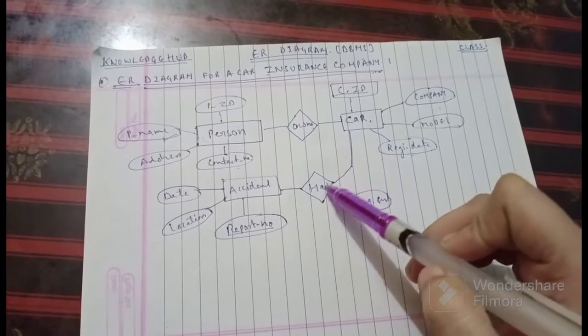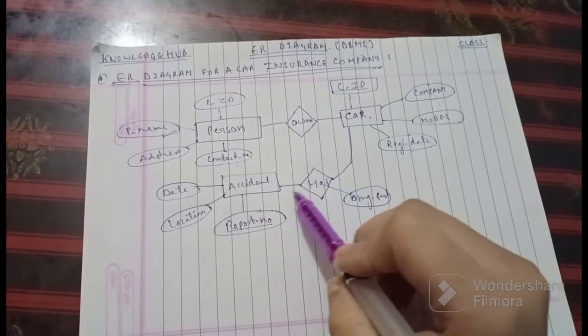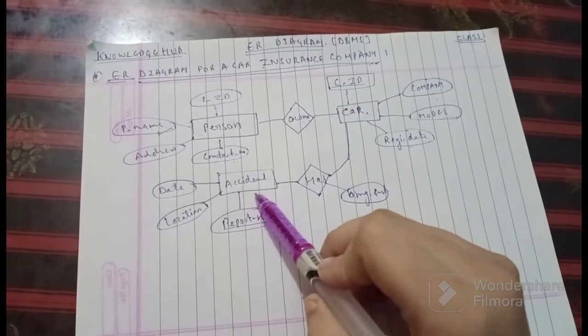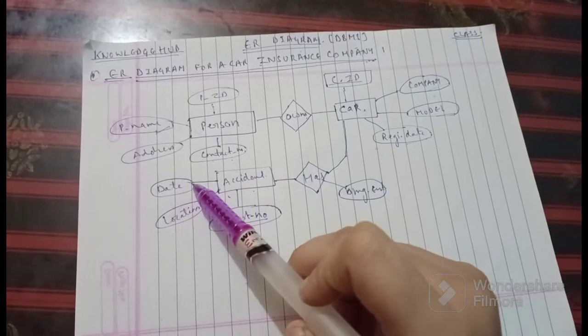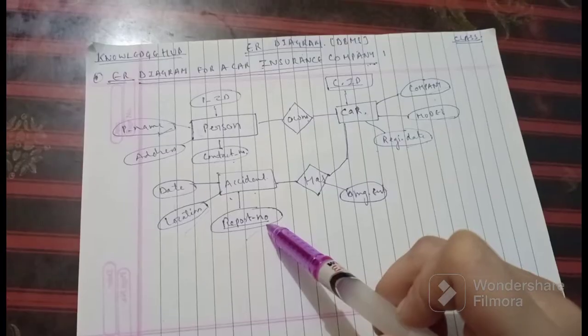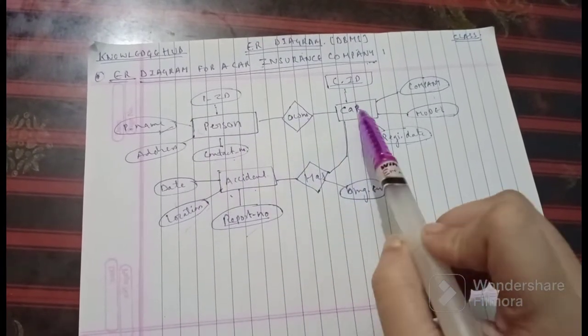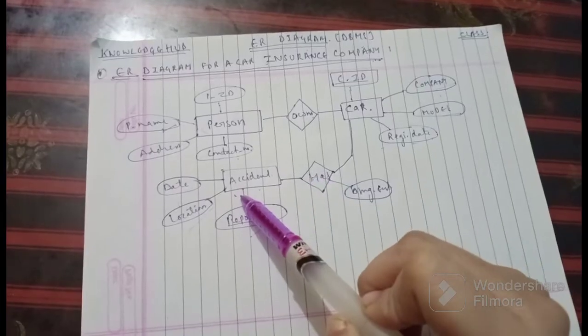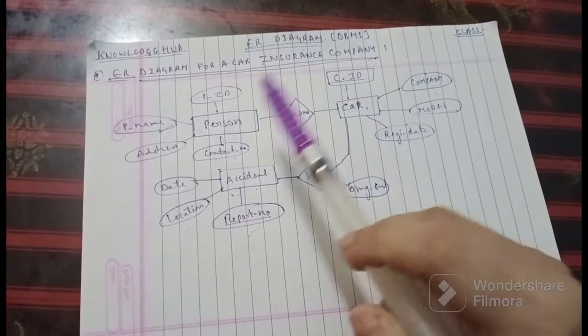If you have a car, then it may have a damage or an accident. The accident attributes include the date, the location, and the report number. This is all the requirement. Basically, the person owns a car and the car has an accident, so the requirements have been given here.